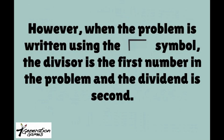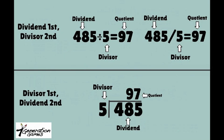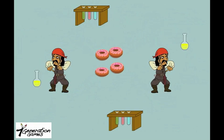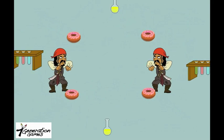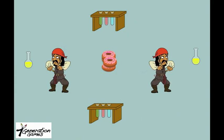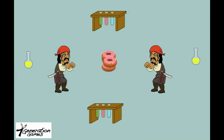However, when the problem is written using the division symbol that looks like a tipped-over L, the divisor is the first number and the dividend is the second number. This is something you just want to make sure you remember so you don't mix up your divisor and your dividend. This will help you prevent easily avoidable mistakes. And once you've got these division terms and concepts down, you might even find division is fun.